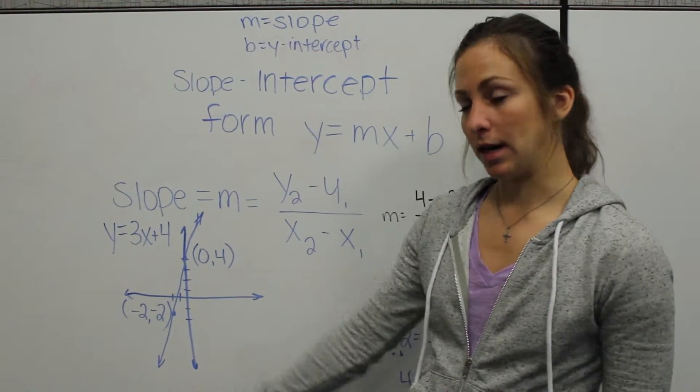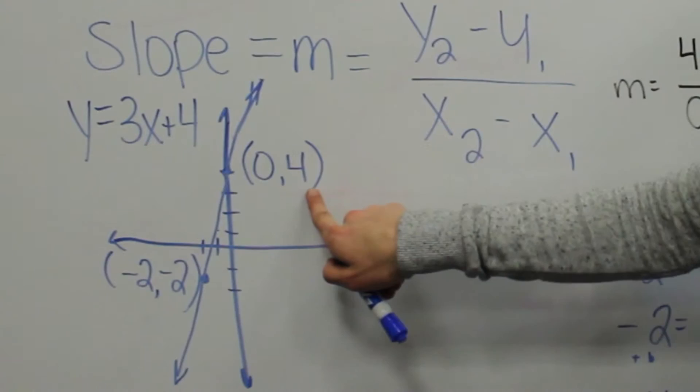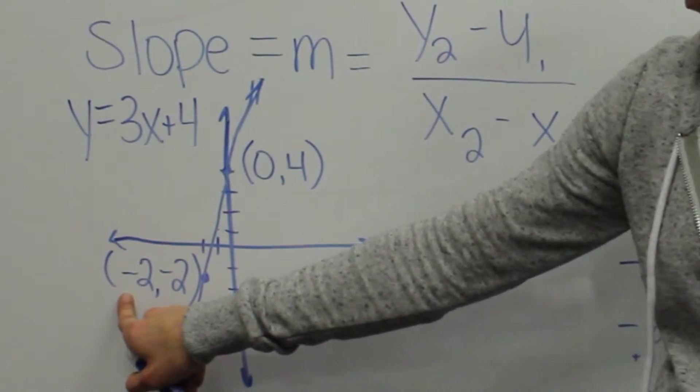Here I've selected two points on this line. In this case, 0, 4 would be our x1, y1, and negative 2, negative 2 would be x2, y2.